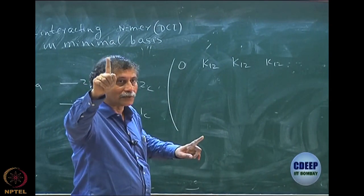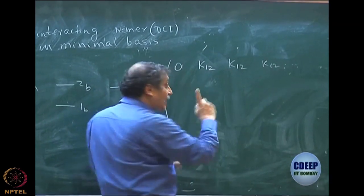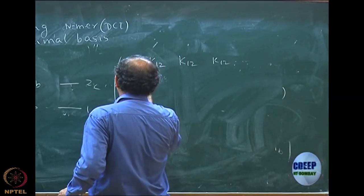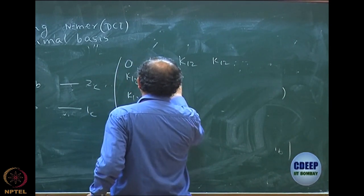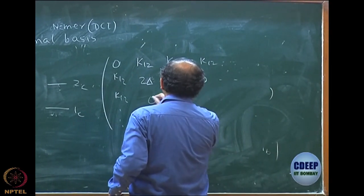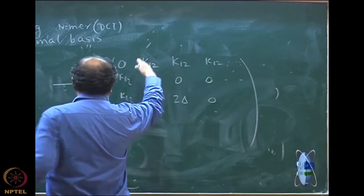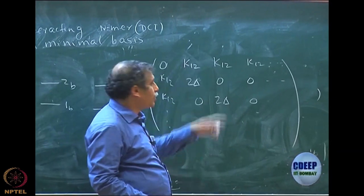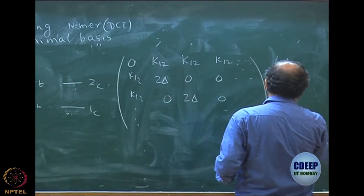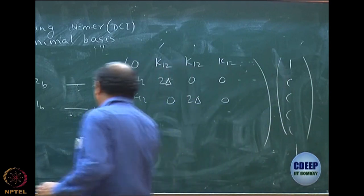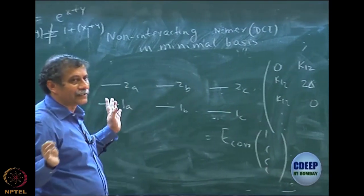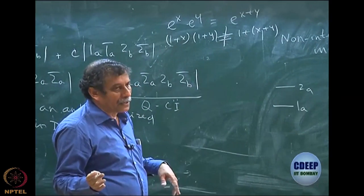I do not have Hartree-Fock to quadruples — please remember. Here only doubles are there. This is a CI for the n-mer, so I will have similarly K12, K12, etc. Then you have 2Δ on the diagonal, and one double to another double is 0 — everything else is 0 — and 2Δ, and so on. These diagonals will all become 2Δ except the first one which will be 0. By symmetry, I can keep writing C, C, C — exactly identical — equal to E_correlation times C, C, C. Just expand this from dimer to n-mer and solve the problem in the same manner.